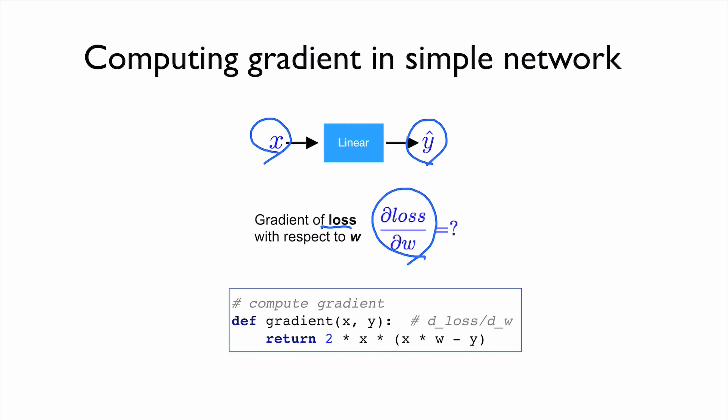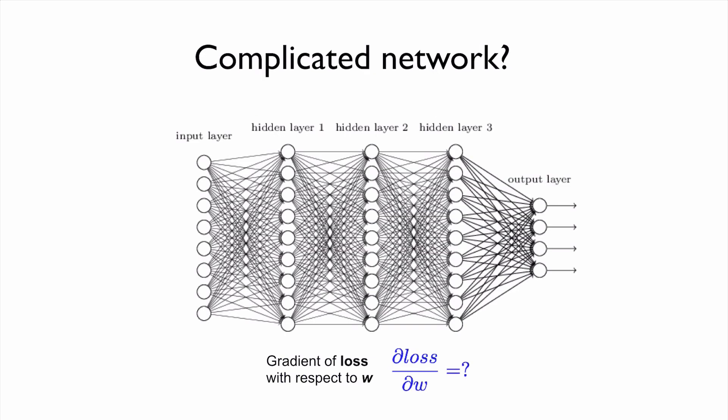For the gradient, we just manually computed it because our model was extremely simple. However, if we have a very complicated network like this, then we often are using nonlinearities between these nodes. In this case, manually computing these gradients becomes very difficult or even impossible.